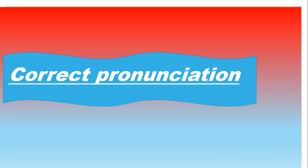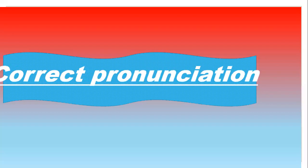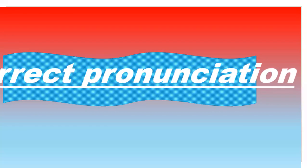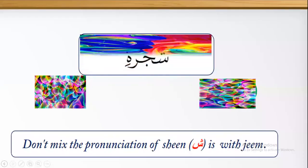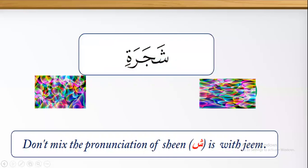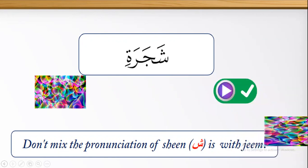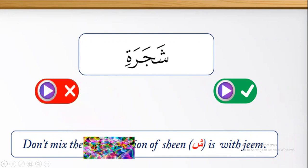Now let's practice how to pronounce letter Sheen correctly. Number one: don't mix the pronunciation of Sheen with Jim. The right pronouncing for this word is Shajariya. The wrong pronouncing is Jahjariya — no, it's Shajariya.